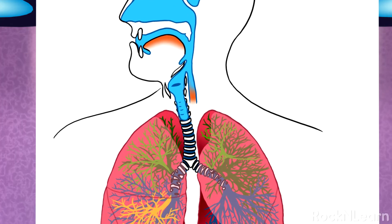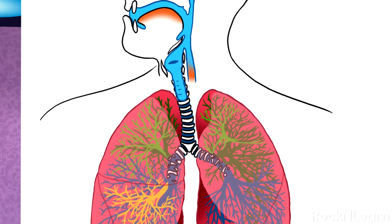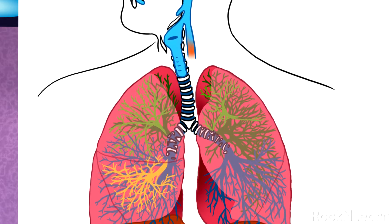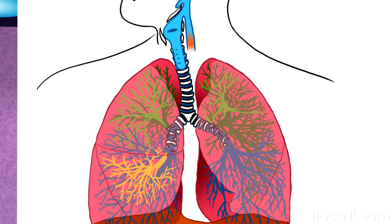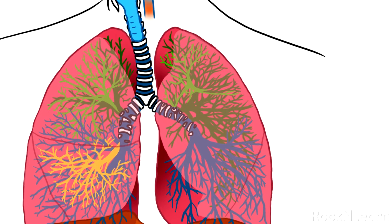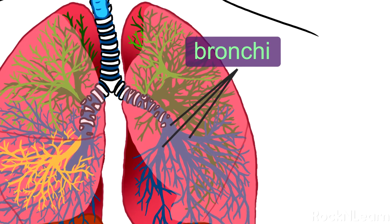At the bottom of the trachea are two large tubes called the main stem bronchi. One goes into the left lung and the other goes into the right lung. Each main stem bronchus then branches off into tubes or bronchi. They get smaller and smaller like branches on a tree.